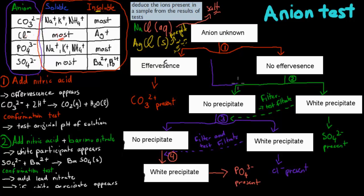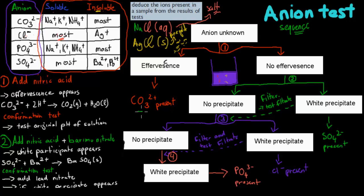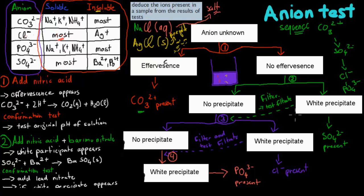We have our sample and we'll do four different tests to figure out what's inside. The first thing you need to know is that we need to do them in a certain sequence. We test for carbonate first, then sulfate second, then chloride ions third, and phosphate ions fourth. There's a reason why we do that sequence — you need to remember these four tests in order: first carbonate, then sulfate, then chloride ions, then phosphate ions.